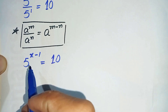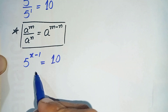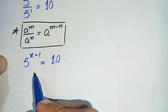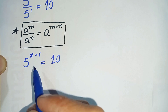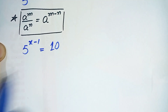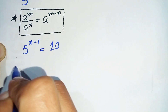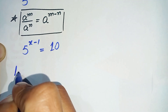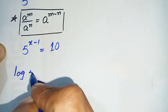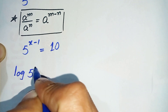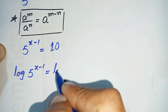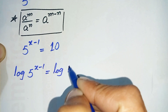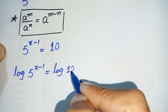Now to find the value of x in this equation, we will use an easy approach: take common log on both sides. It will become log of 5 raised to power (x minus 1) is equal to common log of 10.